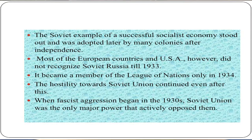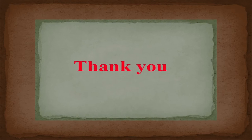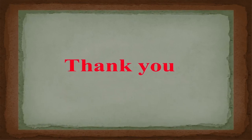Most of the European countries and the USA did not recognize Soviet Russia until 1933. It became a member of the League of Nations only in 1934. The hostility towards Soviet Union continued even after this. When fascist aggression began in the 1930s, Soviet Union was the only major power that actively opposed them. The 1930s witnessed several acts of aggression by Italy, Germany and Japan. Most of the Western powers not only remained mute spectators to these acts, but even supported some of them, thereby helping the fascists prepare the stage for war. With this, I end today's discussion and I shall meet you again in another program. Thank you very much.